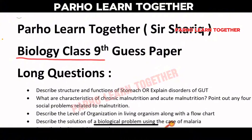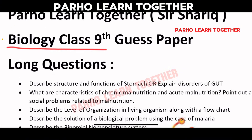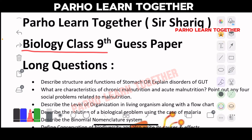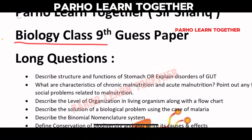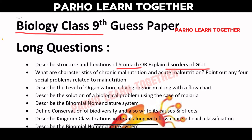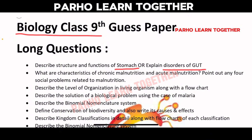First we will discuss long questions in Class 9 biology. I am using my highlighters. Describe the structure and function of the stomach and disorders of the gut. What are the characteristics of chronic malnutrition and acute malnutrition?